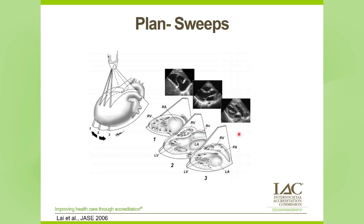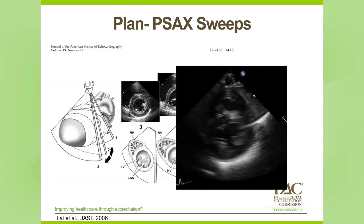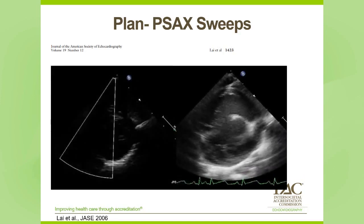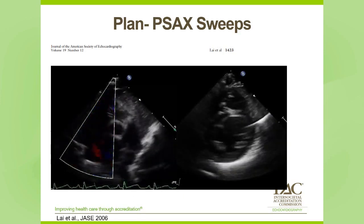Sweeps are an essential part of congenital imaging. Think of a sweep as a complete motion from side to side, anterior to posterior, or superior to inferior. It shows us what is going on in between the typical slices we normally obtain. In the parasternal short axis view, we have a typical left ventricle, mitral valve, and a slice at the base. This is an example of a 2D sweep, starting near the apex and sweeping all the way up to the base. We also perform the same sweep with color Doppler, sweeping the interventricular septum — noting a little VSD there in red.